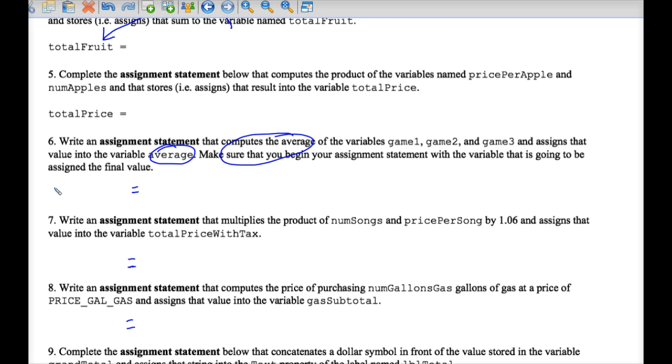In number six, the variable into which you're assigning a value is average. So we've used that up, so cross it out maybe in your word problem. And what else is unused information? Game one, game two, game three.